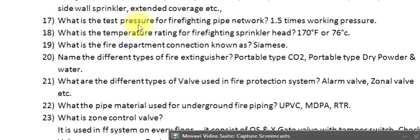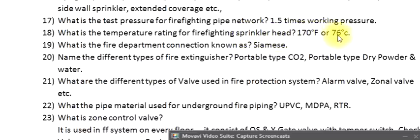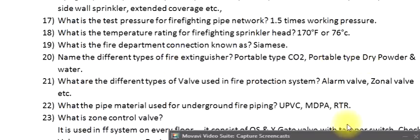Question 17: What is the test pressure for a firefighting pipe network? 1.5 times working pressure. Question 18: What is the temperature rating for a firefighting sprinkler head? 170°F or 76°C. Question 19: What is the fire department connection known as? Siamese. Question 20: Name the different types of fire extinguisher. Portable type CO2, portable type dry powder, water.